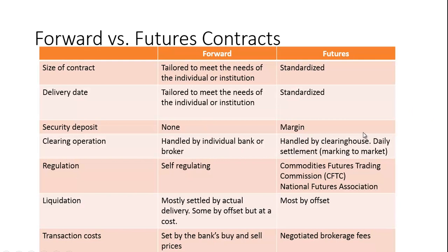Here's a comparison of the two. In terms of size, the forward contract is tailored to meet the needs of the institution, while the futures contract is standardized. Delivery date is also tailored for the forward contract, and standardized for futures. There is no security deposit for a forward contract, whereas futures require margin, which is essentially a security deposit.